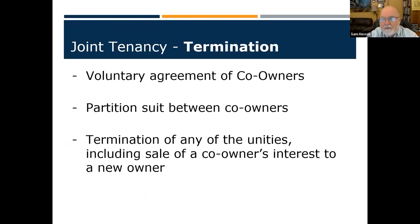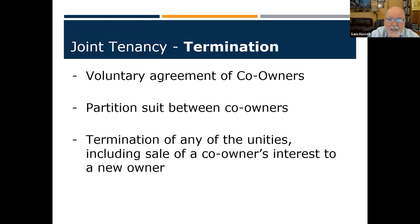How do you terminate joint tenancy? By voluntary agreement of co-owners — all sell their shares and it's gone. Or through a partition suit — an attorney separates the parties via a quitclaim deed. Also, if any of the four unities — possession, interest, time, or title — change, joint tenancy is over and it defaults to tenancy in common.